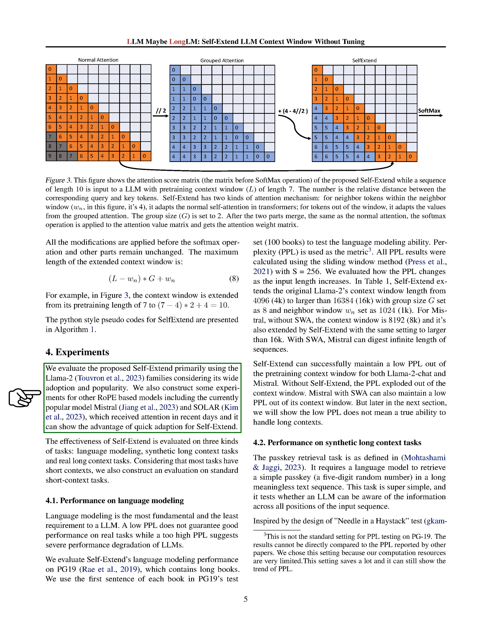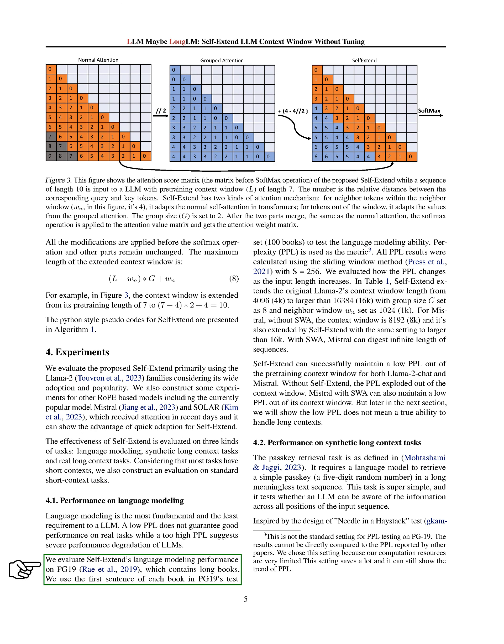For instance, if we extend the context window from its original length of 7 to 10, we can see how this works in practice. We tested Self-Extend using the LLaMA 2 families, which are widely used and popular. We also conducted experiments with other RoPE-based models, including Mistral and Solar. We evaluated Self-Extend's effectiveness on three types of tasks: language modeling, synthetic long-context tasks, and real long-context tasks, as well as standard short-context tasks. For language modeling, we tested on PG-19, a dataset containing long books, using perplexity (PPL) as the metric. We found that Self-Extend was able to extend the original LLaMA 2's context window length from 4,096 to larger than 16,384 with a group size of 8 and a neighbor window of 1,024.